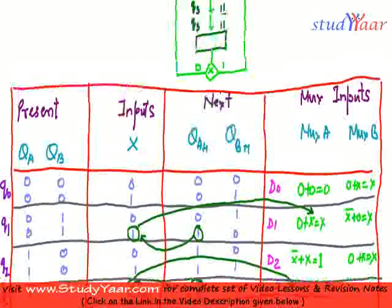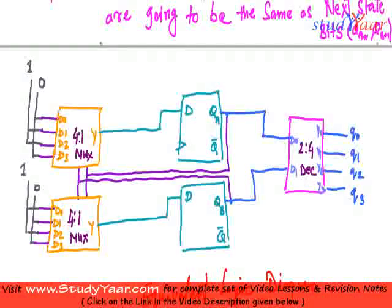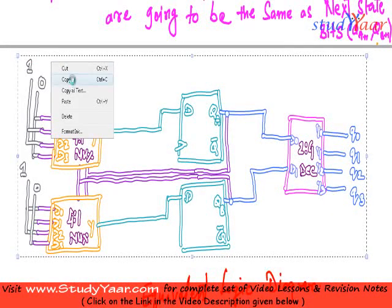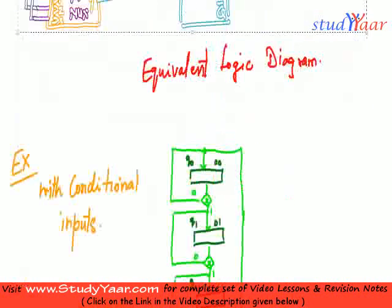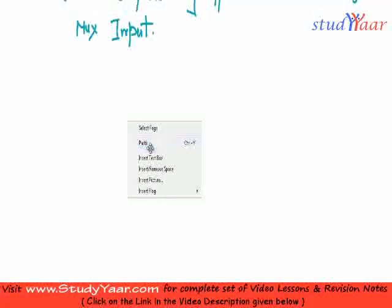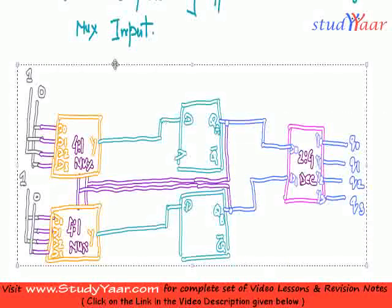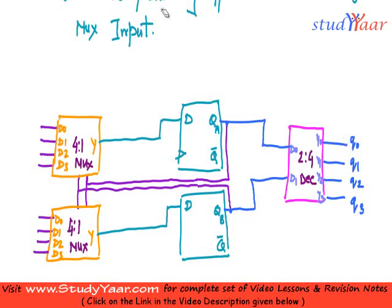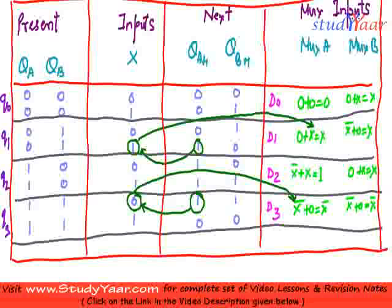Now let's realize it quickly. I am going to copy this thing as it is and change the max inputs. I am going to paste it down below. Now obviously these inputs are not valid anymore — I have to have a new set of inputs. My new set of inputs are over here; I have already calculated what these inputs are.